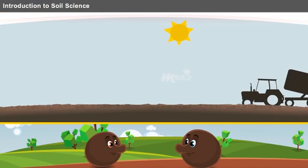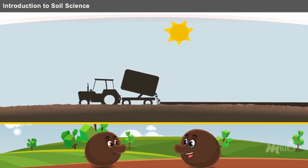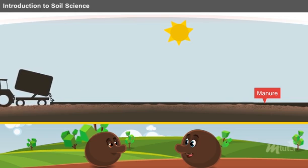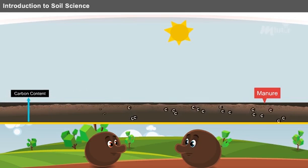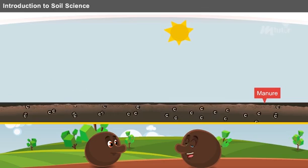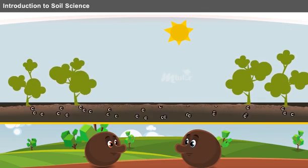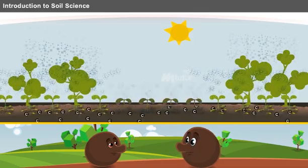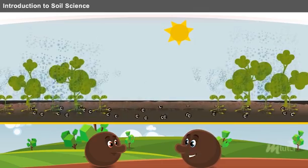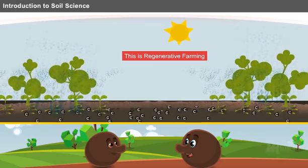By covering the soil with composite products such as manure or cow dung, the carbon content of soil increases. This soil, when combined with other regenerative practices such as planting trees and cover crops, can rebuild soil and sequester carbon. This technique is known as regenerative farming.